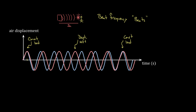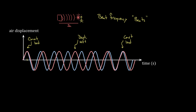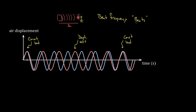Let me play what this sounds like. Here's the A note at 440 hertz. Now here's a slightly different frequency — 443 hertz. That probably sounds like the exact same thing on its own. But if I play them both together, you hear a wobble. That's what physicists mean by beat frequency or beats — that wobble in sound loudness when you overlap two waves of different frequencies.